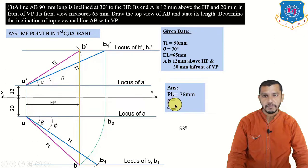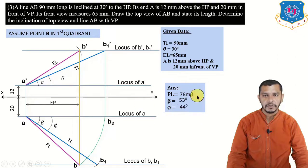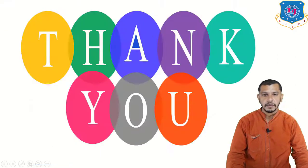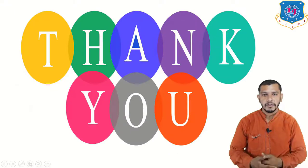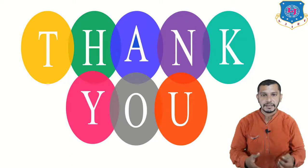Measure the plan length — it equals 78 mm. Measure beta using the protractor — beta is approximately 63 degrees. Measure phi using the protractor — phi is approximately some degree value. This is the final answer. Thank you for watching; we will come with more problems of projection of lines in our next lecture. Till then, take care.